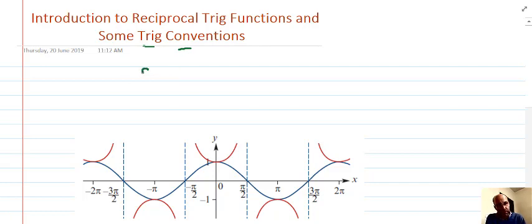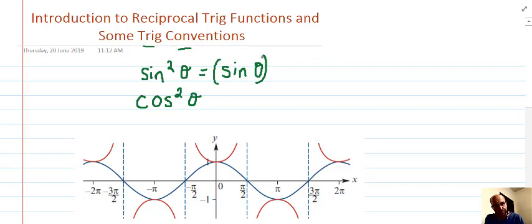If you ever see this notation sine squared theta or cosine squared theta, it actually means for sine squared theta, sine theta all squared. And the second one means cosine of theta all squared.